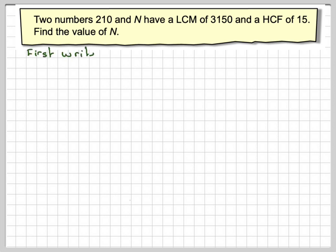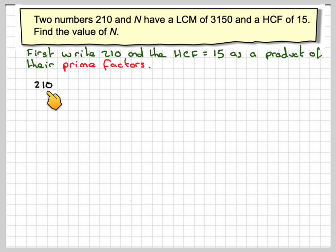So first of all, if we write 210 and the HCF as a product of their prime factors. There's two ways of doing that, either by repeated division or factor tree. Here I'm going to use factor tree. So two goes into 210, that gives me two and one hundred and five. One hundred and five - well, we know that three goes into it because one plus zero plus five is six,